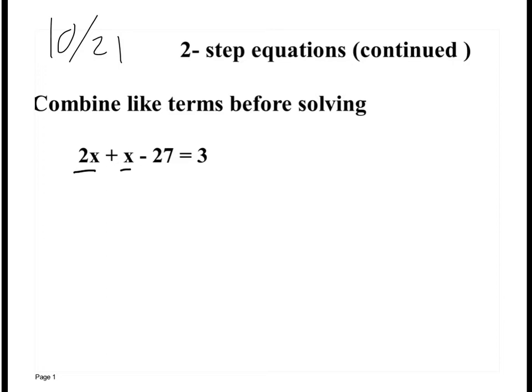So we have to combine those. Remember, you add or subtract the numbers in front. x, remember it's an understood 1. So 2 plus 1 is 3. So we have 3x minus 27 is equal to 3.